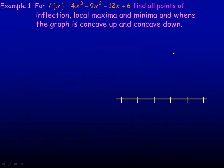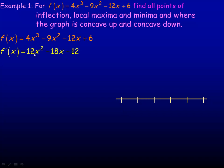In example number one, we're given a function and asked to find all points of inflection, where any local maxima and minima might occur, and where the graph is concave up and concave down. For these, we need both the first and second derivative. Using the power rule, the derivative of 4x cubed is 12x squared, 3 times 4 is 12, reduce the exponent by 1. The derivative of the next term: 2 times negative 9 is negative 18x. The derivative of negative 12x is negative 12. The derivative of a constant is zero.